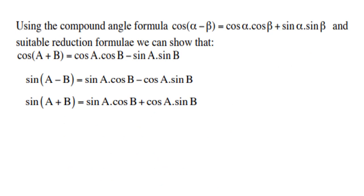Using the compound angle formula we just proved, cos(alpha minus beta) equals cos α cos β plus sin α sin β. We can suitably derive that cos(A plus B) equals cos A times cos B minus sin A sin B. Take note: with cosine, if it is alpha minus beta you'll have a plus in the middle, and if it is cos(A plus B) you'll have a minus in the middle. Both will have cos A cos B and sin A sin B.